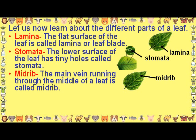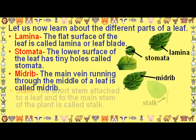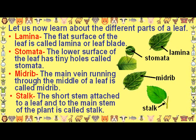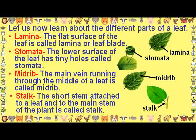The main vein running through the middle of a leaf is called the midrib. The short stem attached to a leaf and to the main stem of the plant is called the stalk.